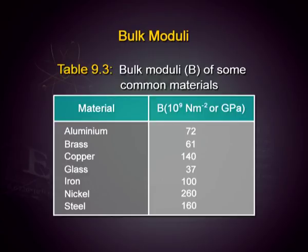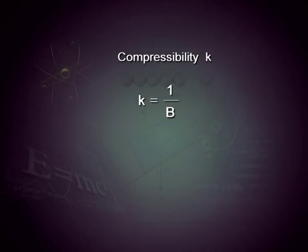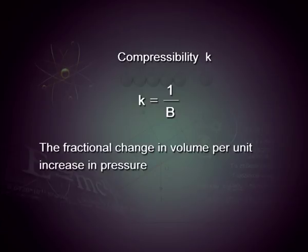Bulk modulus values are given for aluminium, brass, copper, and steel. There is no straight relationship between bulk modulus and Young's modulus, unlike what we had seen in the case of shear. Compressibility is another important value — it is 1/B, the fractional change in volume per unit change in pressure.